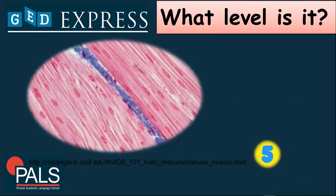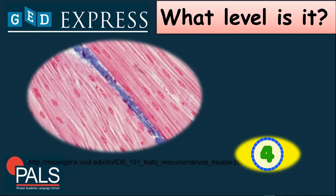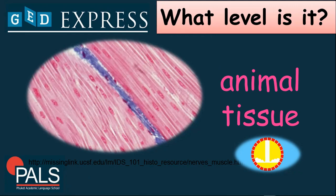Next, we have this one. You see there are several cells that are slightly far from each other. What level is it? That is an animal tissue.